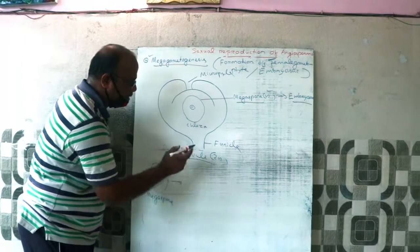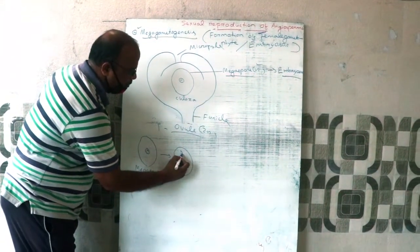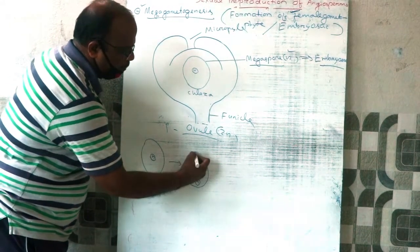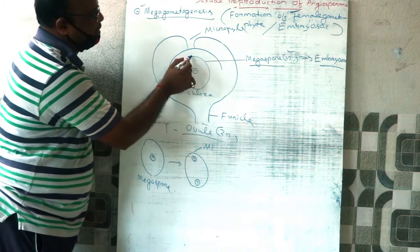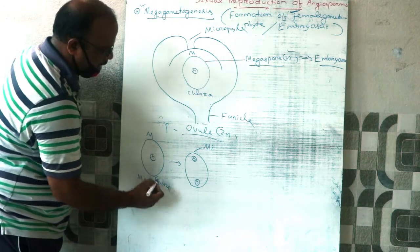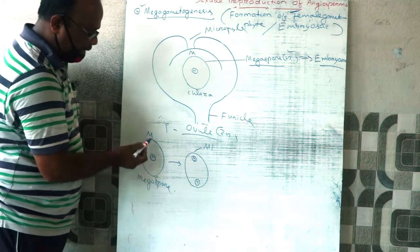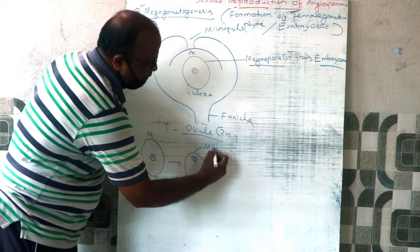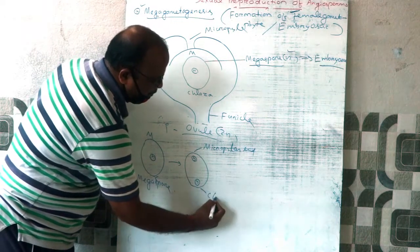The megaspore is haploid and divides by mitosis. The nucleus of the megaspore divides by mitosis to form two haploid nuclei. One haploid nucleus moves towards the micropylar end and the other one moves towards the chalazal end.